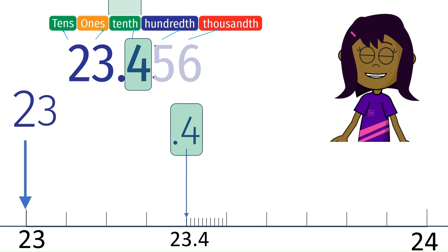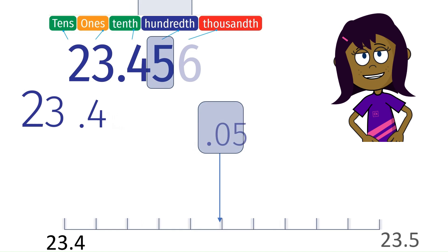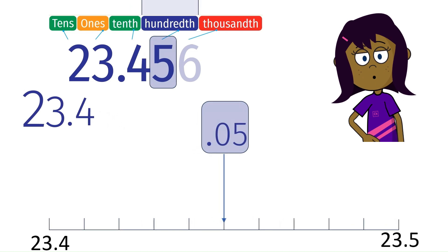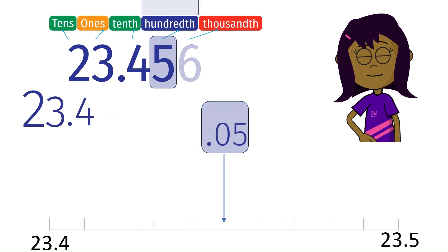Zooming in further to the hundredth place, we have five hundredths or 0.05. So we have location of 23.45.